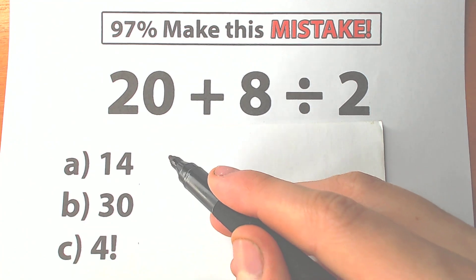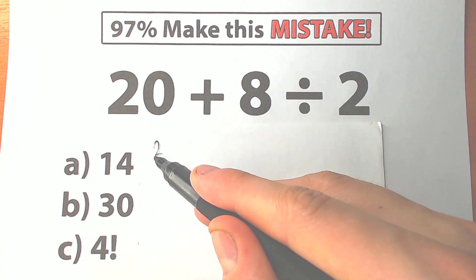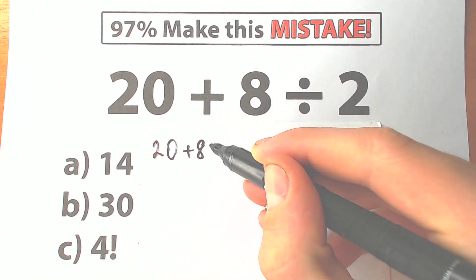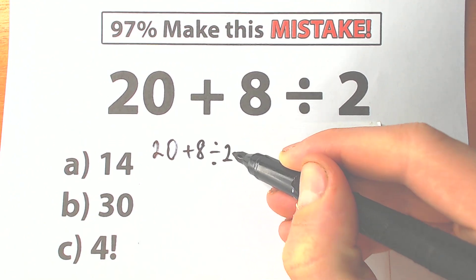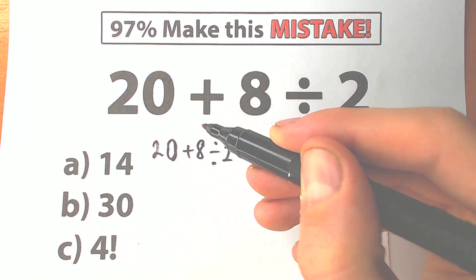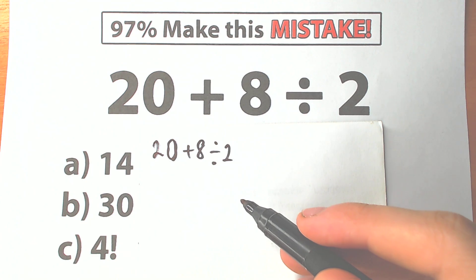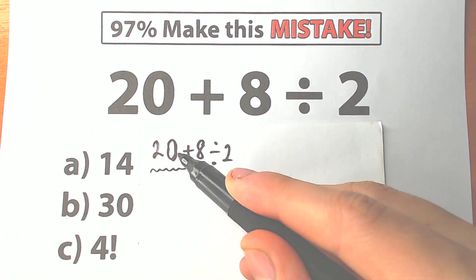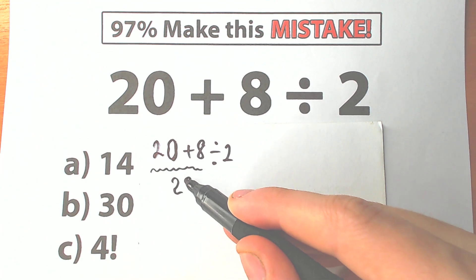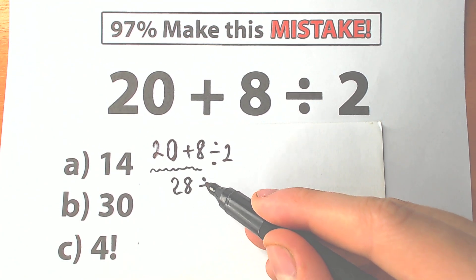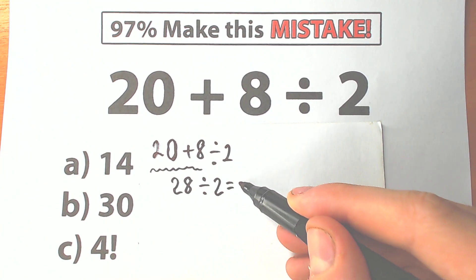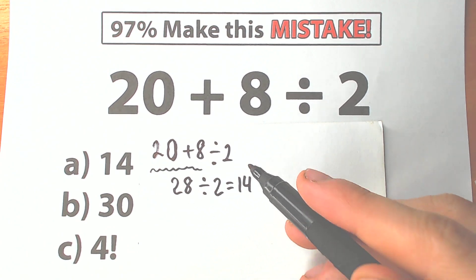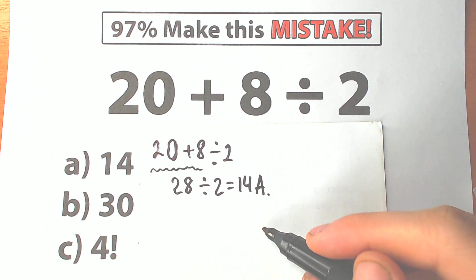First of all, let's start with the solution. We have 20 plus 8 divided by 2. One part of students solve this question like this: they say we have addition first, so we should add first — 20 plus 8 equals 28 — then we divide by 2, which equals 14. So one group of students solves it this way and says that option A is the correct answer.